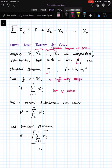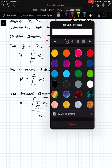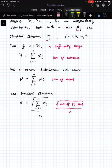And if n is sufficiently large, then the sum of all the outcomes has a normal distribution where the mean is the sum of the means and the standard deviation is the square root of the sum of the standard deviations divided by n.